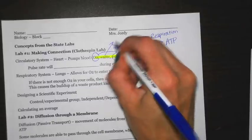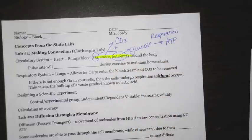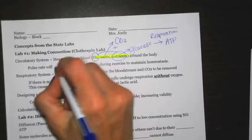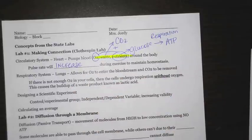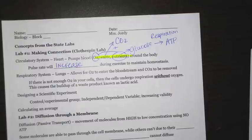For waste products, one example would be carbon dioxide. It's a product of cellular respiration and your body needs to be able to get rid of it. So when you exercise, your pulse rate is going to increase. That's because the flow of blood needs to increase — you need to get more oxygen and more nutrients to your cells, and as they undergo cellular respiration, you need to get rid of those waste products so they don't build up inside your blood.